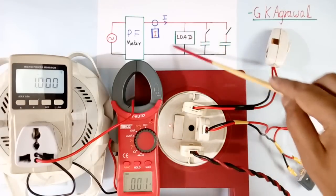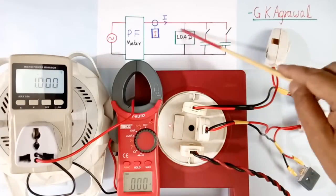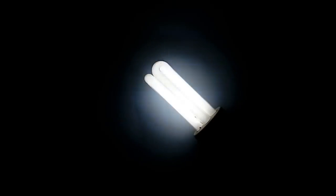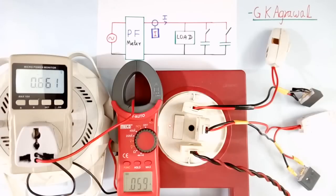Now we will connect CFL lamp load here. Now I have connected CFL lamp load. CFL lamp power factor is 0.66. And current is 0.059 ampere.